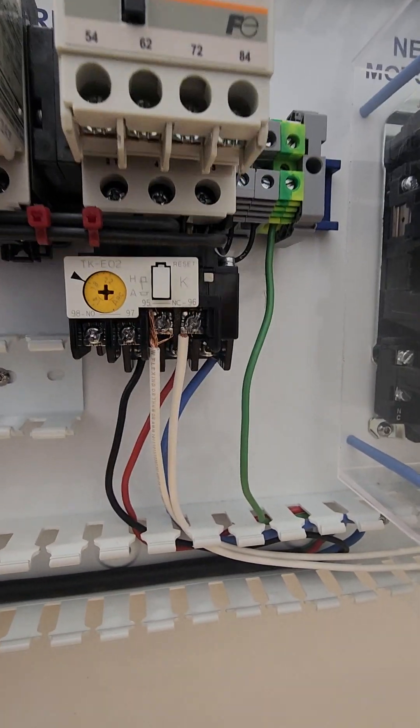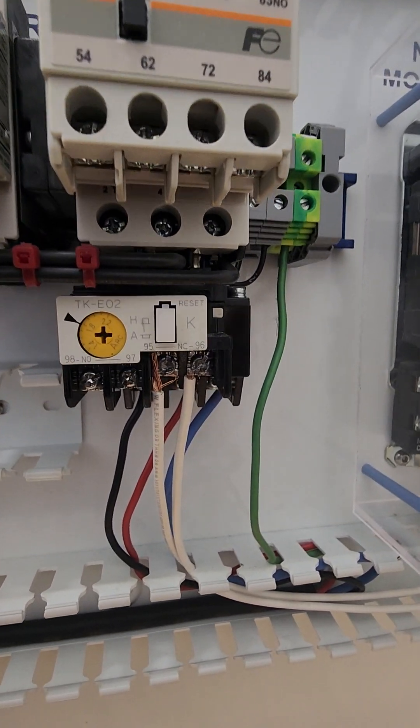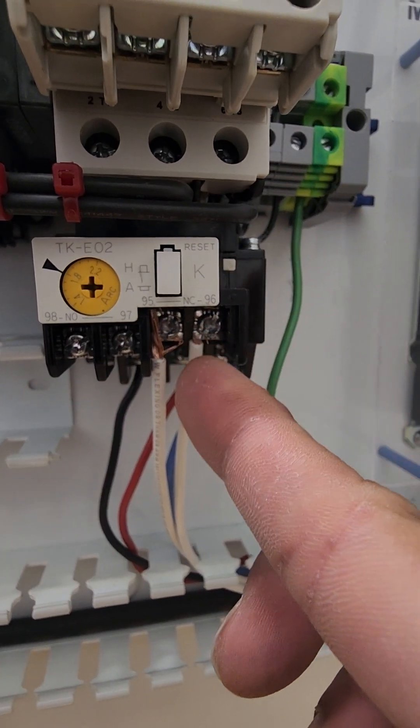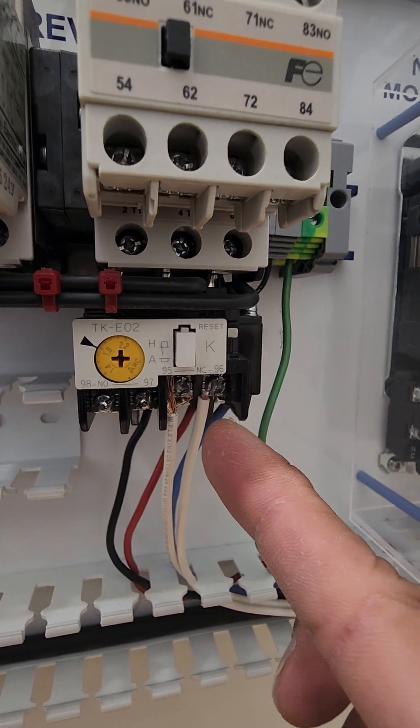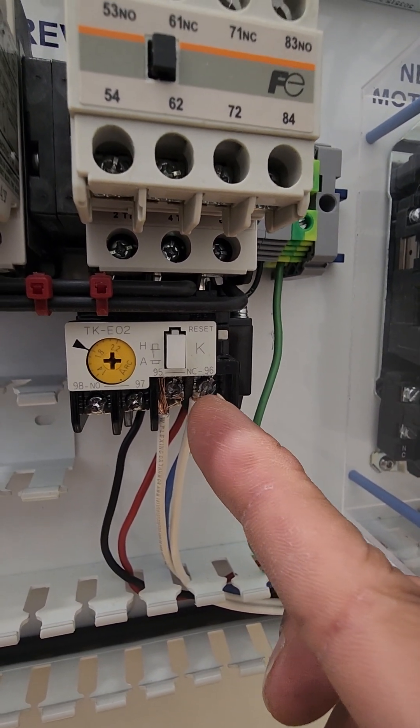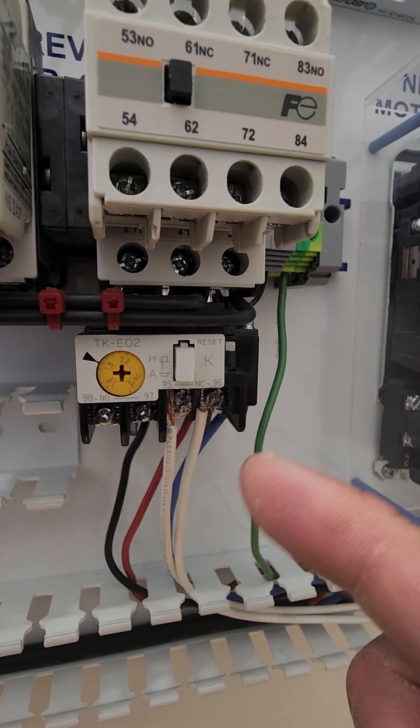The overload relay has the normally closed. I will further discuss why we have the two white wires in the overload relay.